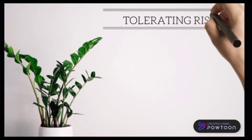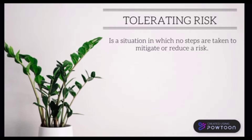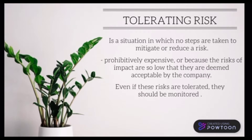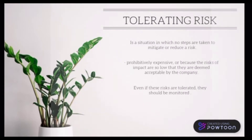The second T is tolerating risk. It is a situation in which no steps are taken to mitigate or reduce a risk. This could be because it is prohibitively expensive, or because the risks of impact are so low that they are deemed acceptable by the company. Even if these risks are tolerated, they should be monitored.